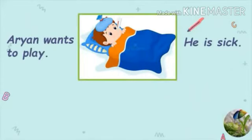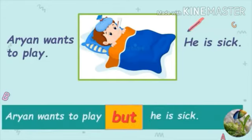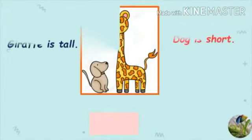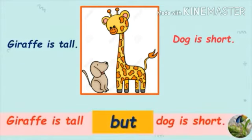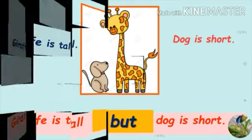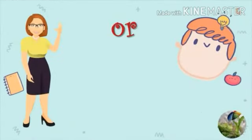Here is our second example. Let's combine these two sentences into one: Arion wants to play, but he is sick. In the third example, Giraffe is tall. Dog is short. Here we are talking about a difference in height, and hence our answer would be: Giraffe is tall, but dog is short.